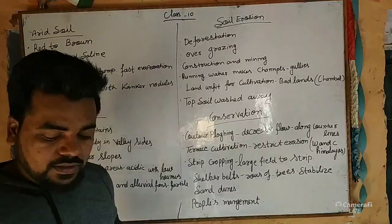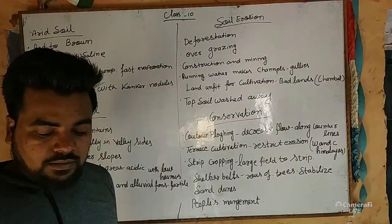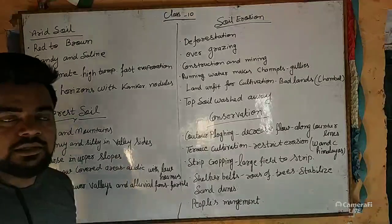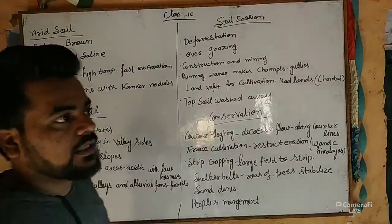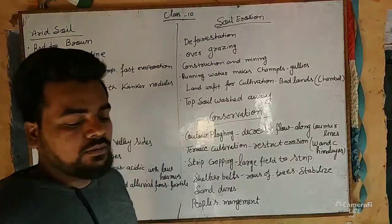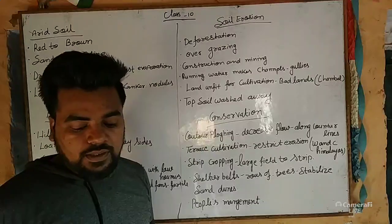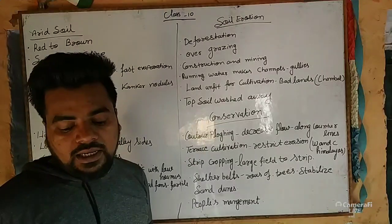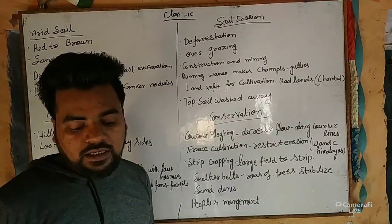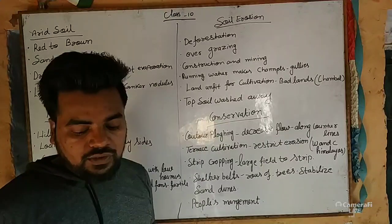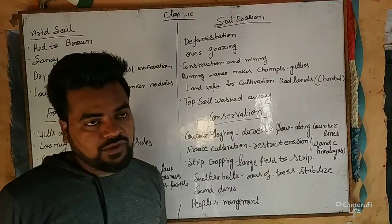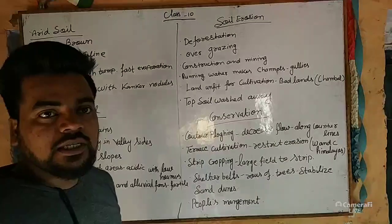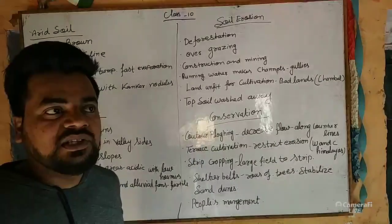Common salt is obtained by evaporating the water — the common salt which we use in our homes. We also have arid soil. Due to dry climate, the soil lacks humus and moisture. Humus and moisture are lost from the soil.